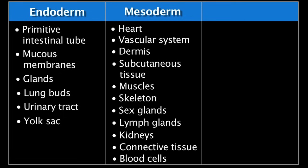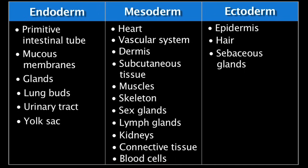And finally, the ectoderm, or outer layer, gives rise to the epidermis, hair, sebaceous glands, sweat glands, and nervous system.